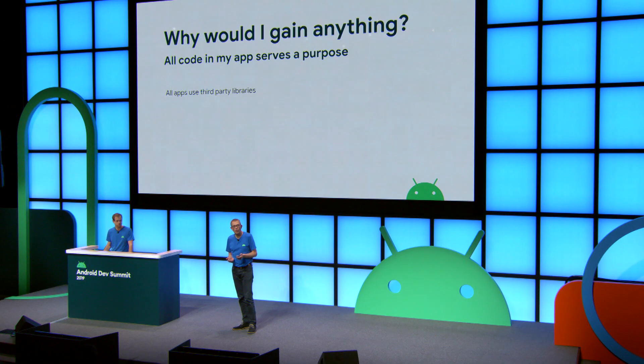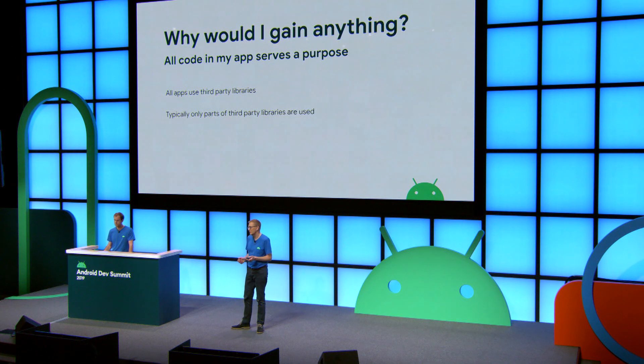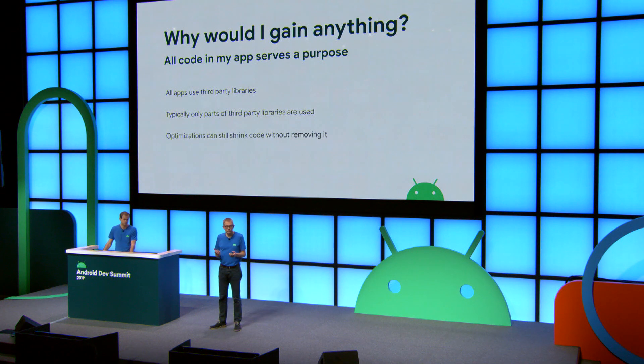So why would you gain anything from using R8? When you write an app, all the code is there to serve a purpose — some feature of the app. So how much is there actually to remove? Well, quite a lot, for two main reasons. First, all apps use third-party libraries, so there's a lot of code you have not written, and typically only a very small part of a library is used in a particular app. Second, even after removing unused code, the remaining code can still be optimized for size using the other optimization techniques.